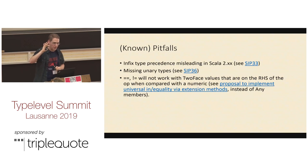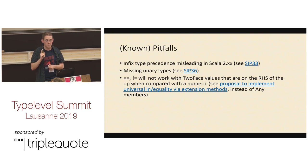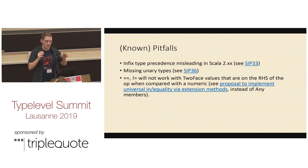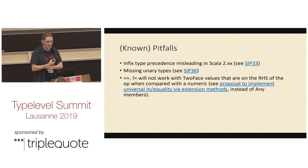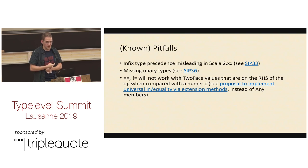A few pitfalls: infix type precedence is misleading in Scala 2 — it doesn't work the way you'd expect, so there's a SIP for that, and it works well in Dotty. Missing unary types — if you want them, say so. And if you use two-phase values on the right-hand side of a comparison, it won't work as expected because it's embedded in the Any trait. There is a proposal for universal inequality with extension methods that would solve this.